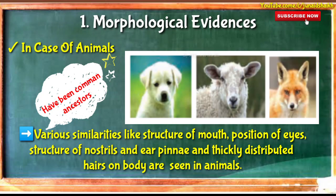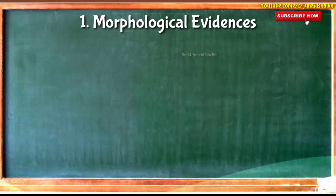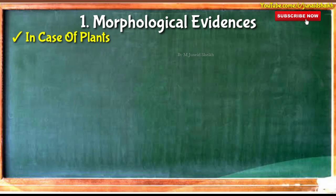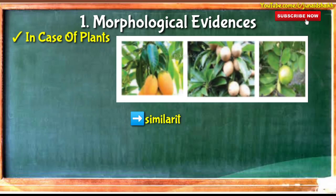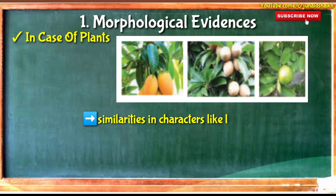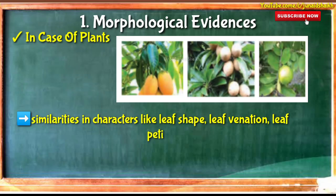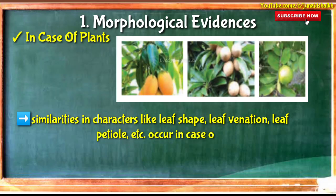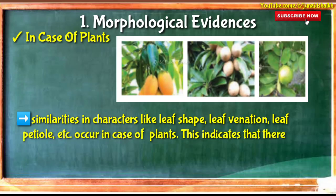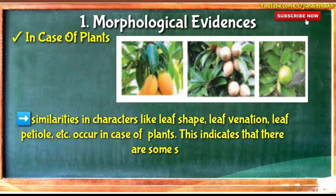In the case of plants, similarities in characters like leaf shape, leaf venation, and leaf petiole occur. This indicates that there are some similarities in those groups, and hence it proves that their origin must be the same — they must have a common ancestor.